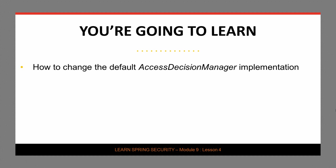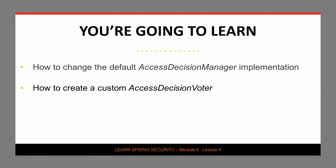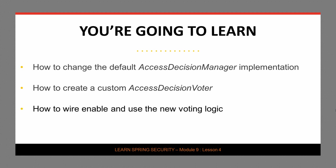We're going to start changing the default access decision manager implementation. Remember that by default we're using the affirmative-based implementation, and we're going to go with the more stricter unanimous-based implementation just to make sure that all voters either abstain or vote positive. We are then going to create our custom access decision voter, wire that in, and start using it. We are going to debug through exactly what's happening and understand why we need the custom voter in this case.